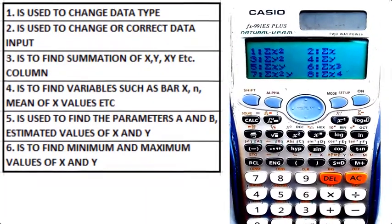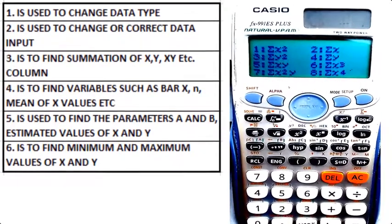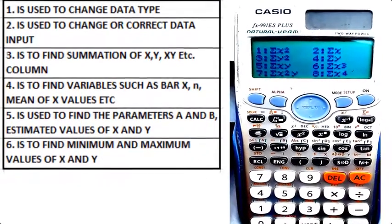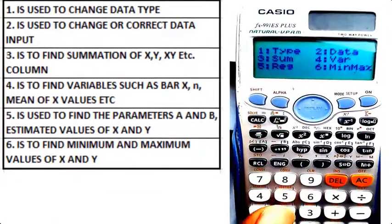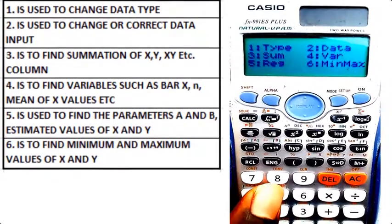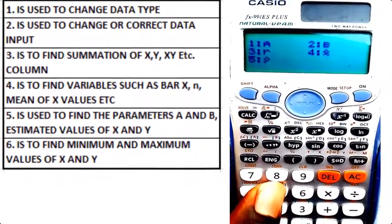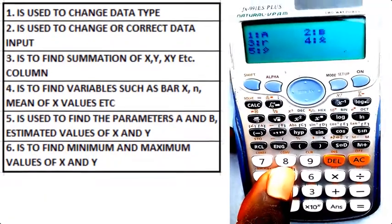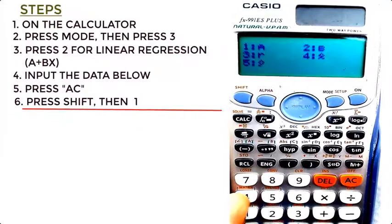I can find the sum of x squared, summation x, summation y squared, summation y, summation yx, summation x squared y, summation x to the 4th, and like that. Now if I click on 5, I can find the estimated value of x, the estimated value of y.